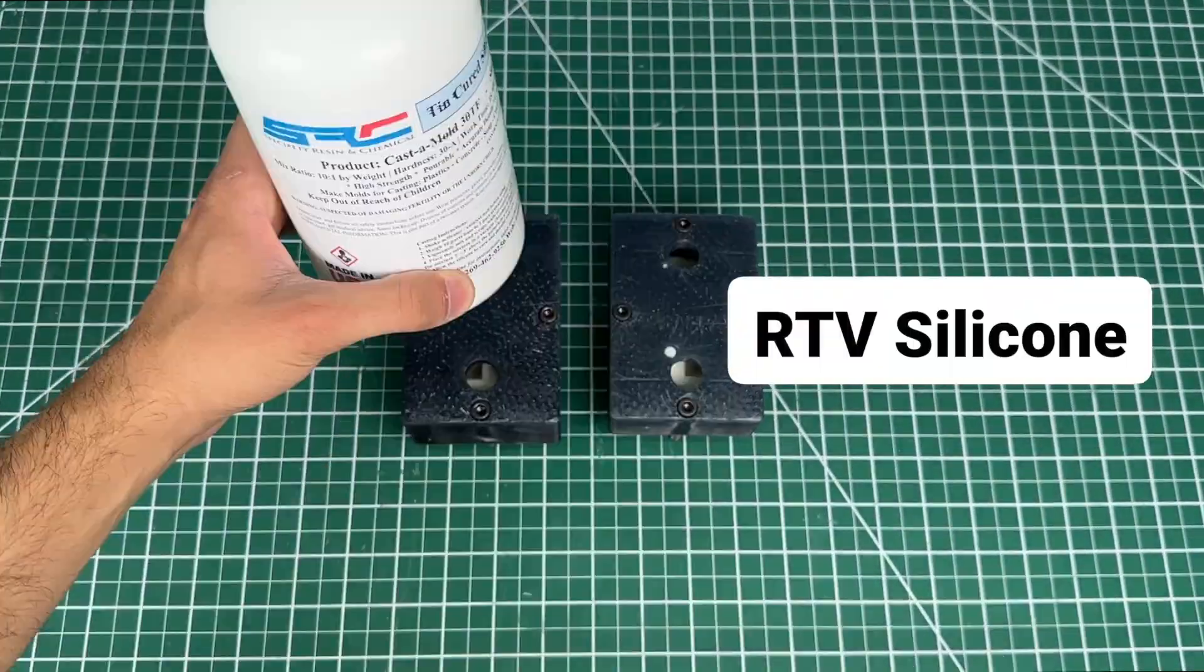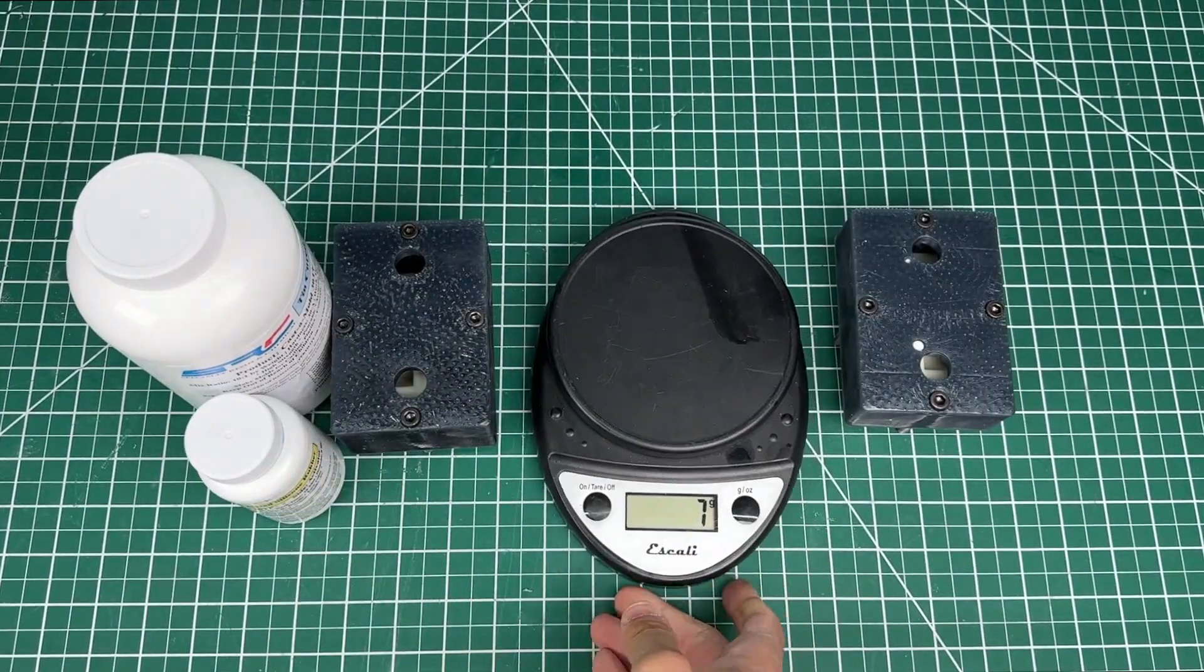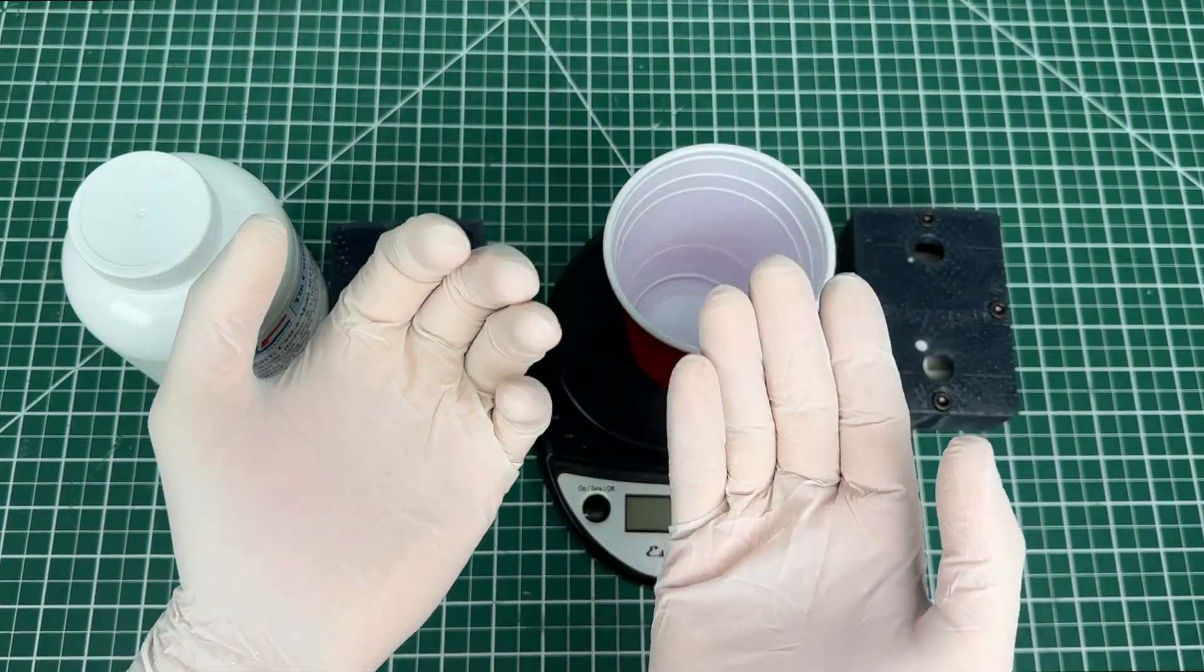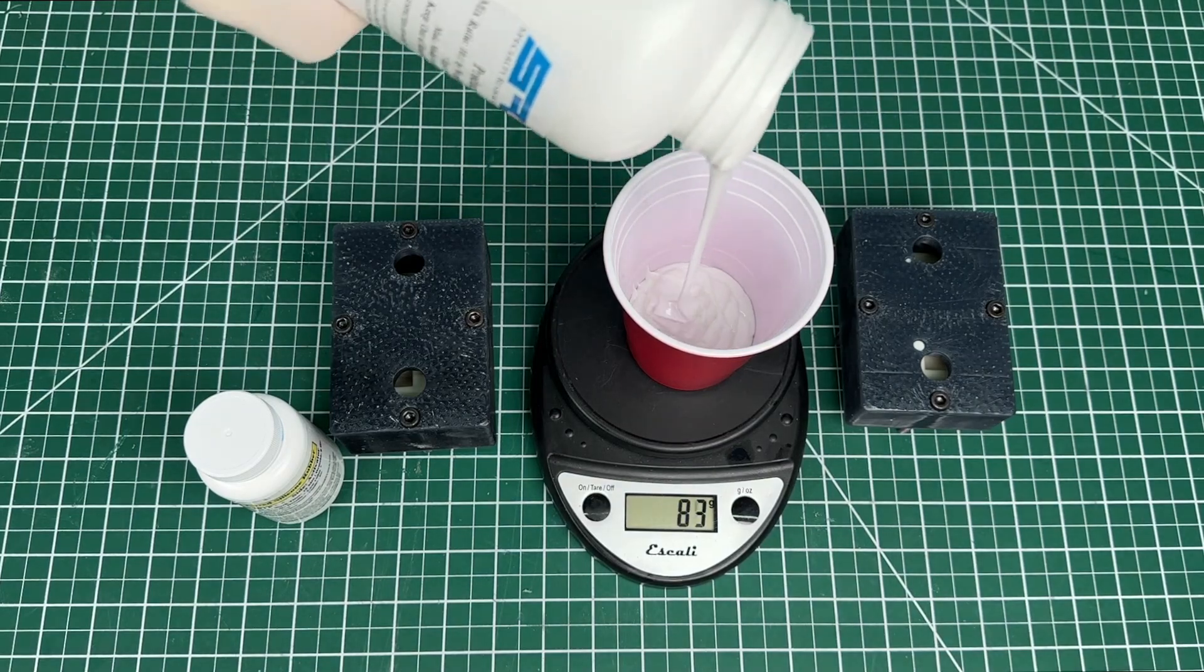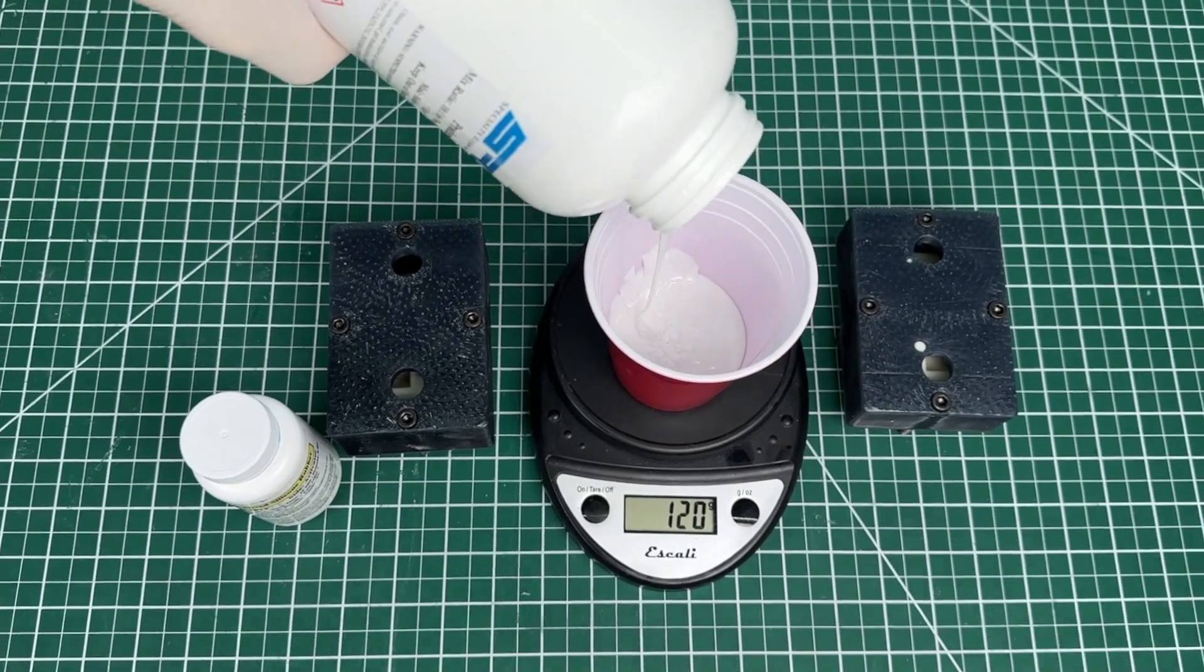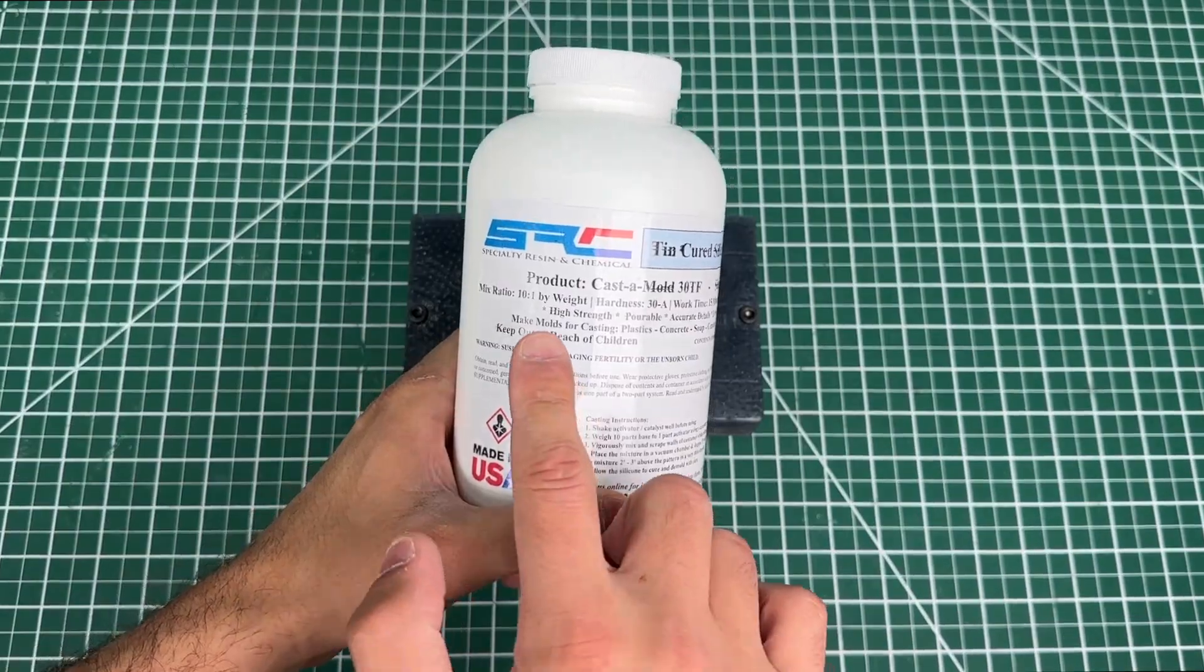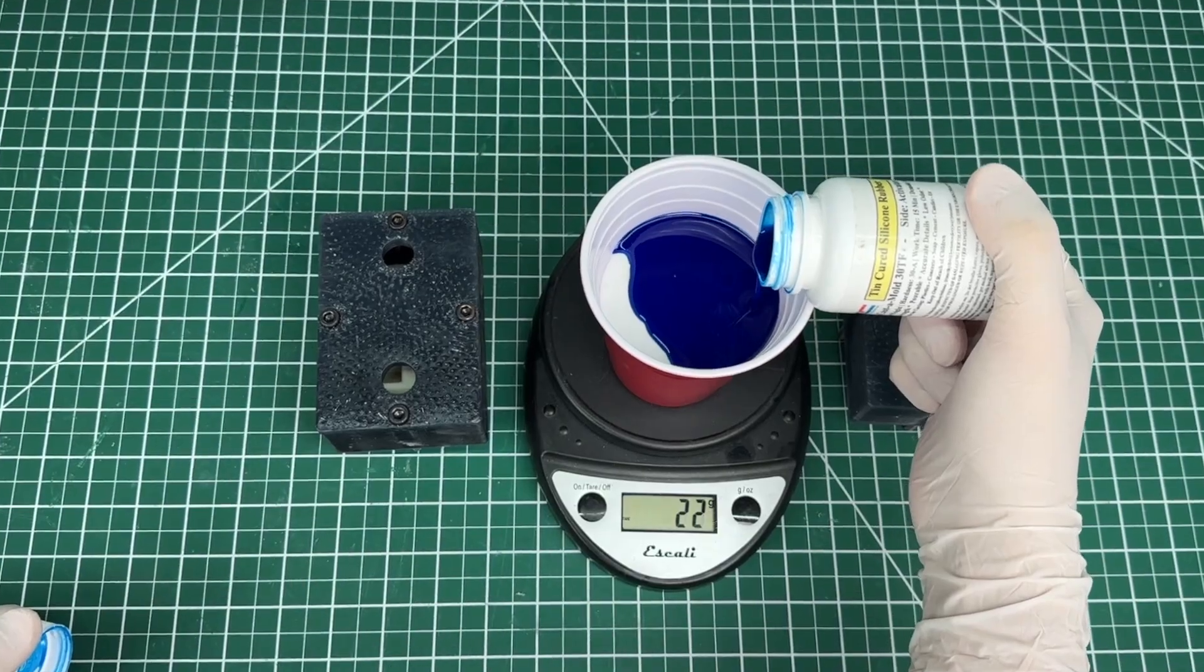Now let's grab our RTV silicone that we got online along with the hardener. We also need a scale and a cup to measure our material and as always safety goggles and gloves to avoid accidents. We begin by pouring in the RTV silicone, which is this white gooey material that has the same consistency as Elmer's white glue. We continue to fill the cup until we get to about 320 grams. Now we need to add the hardener. The instructions call for one-tenth of this blue hardener by weight, which in this case is about 32 grams.